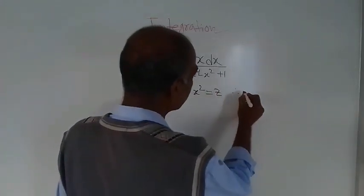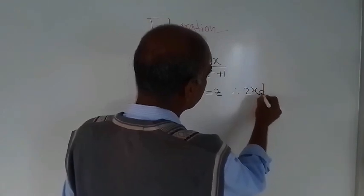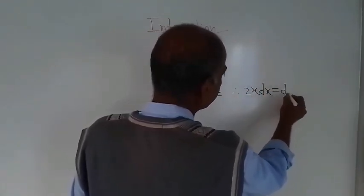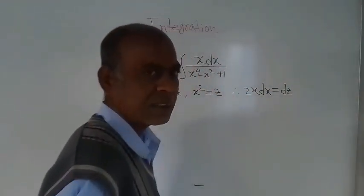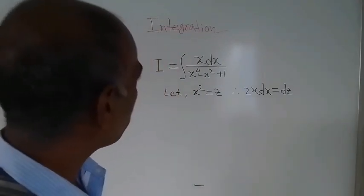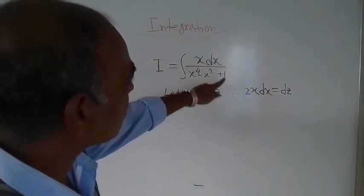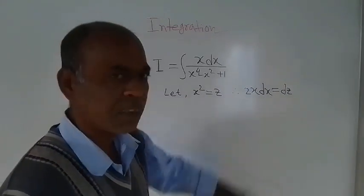On differentiation, what are you getting? On the left hand side, you are getting 2x dx, and on the right hand side, just dz. So here you will see that x dx is there. Therefore, x dx is dz by 2.